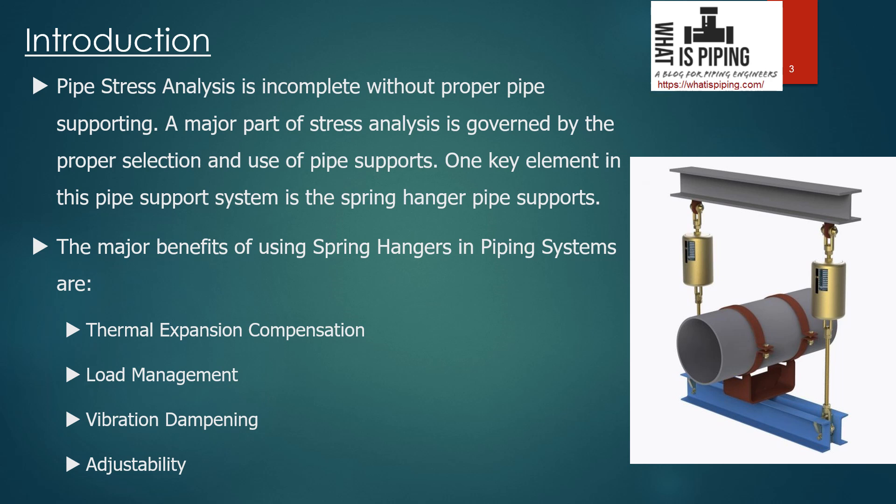The next benefit is load management. One of the primary benefits of spring hanger pipe supports is their ability to efficiently manage the weight of pipes and equipment. By distributing the load evenly, they prevent sagging, bending, or deformation of the pipeline. This not only extends the lifespan of the pipes but also ensures efficient flow of materials. The spring hanger shares some of the piping loads through its spring, so load transfer to nearby equipment or other important components becomes less.